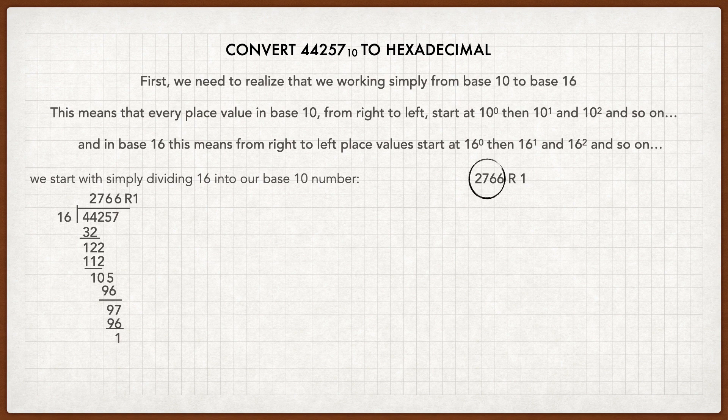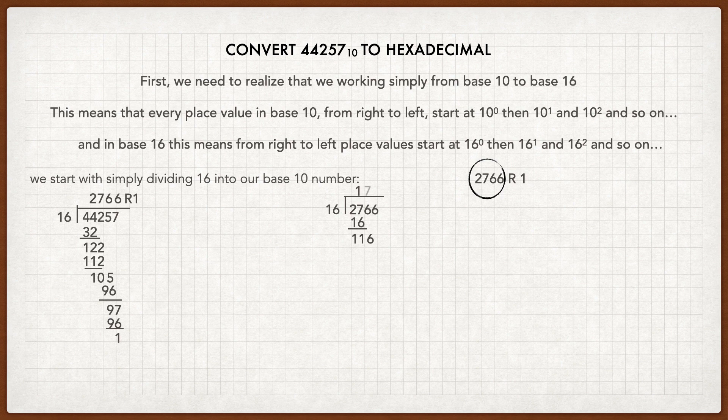So we're going to divide 16 into 2,766 now. 16 goes into 27 only once, and we're left with 11. We're going to bring down the 6. And we know from our previous long division, 7 times 16 is 112, so we're left with 4. We're going to bring down that 6. 16 times 2 is 32, and we're left with a remainder of 14. And we're going to write that over on the side.